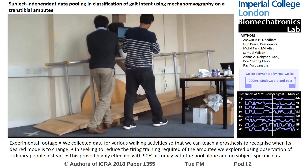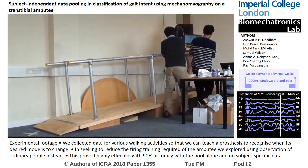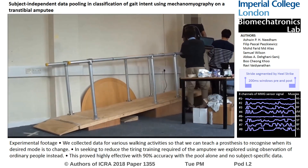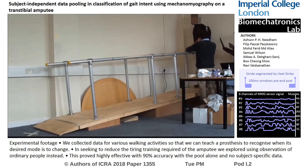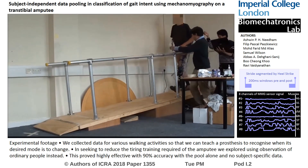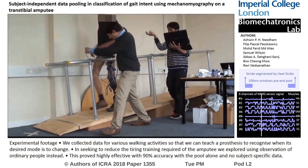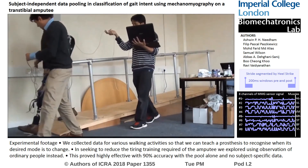A classification algorithm based on a cubic support vector machine was used to assess the potential for real-time classification of gait mode and ultimately real-time control of a powered knee prosthesis.